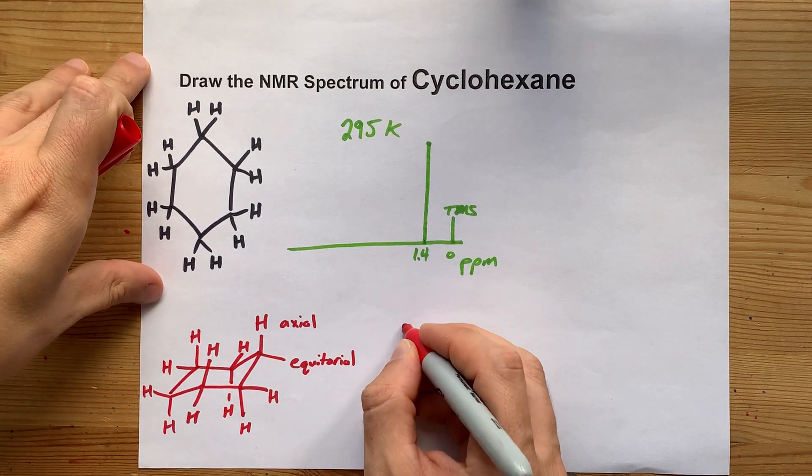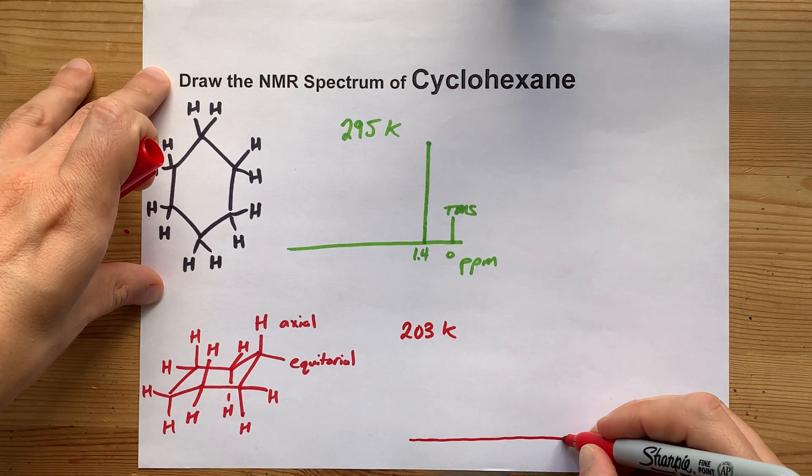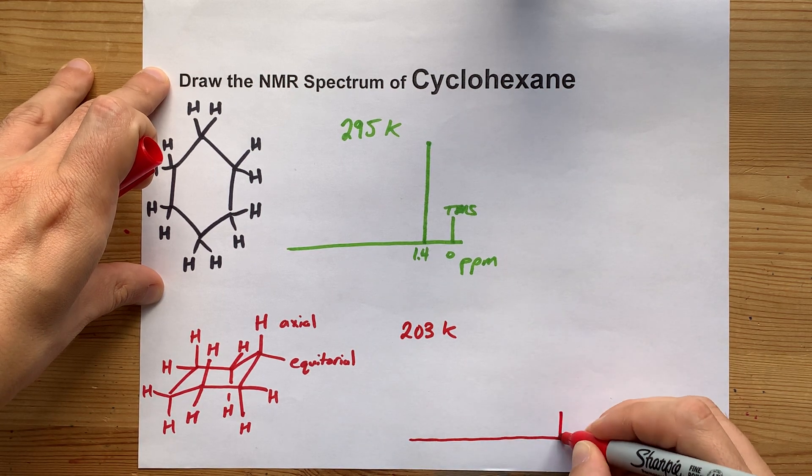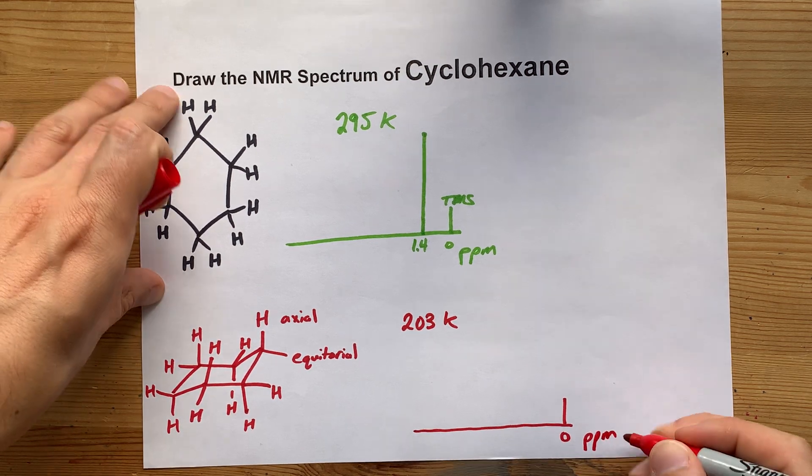If you go down to what reference do I have here, 203 Kelvin, that's slow enough to make it that an NMR spectrum can actually show you the difference between the two.